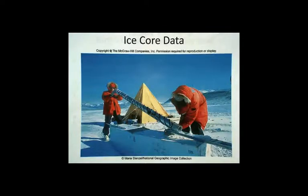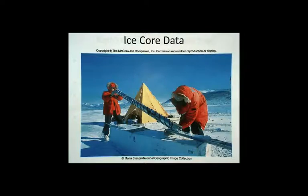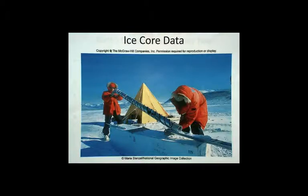To get data from millions and millions of years ago, scientists have drilled down into the rock at the bottom of the ocean. By looking at the change in the types of fossils that tell them the types of plants that were available, the amount of limestone, calcium carbonate and so on in that rock, they can go back over time and figure out what the concentration of carbon dioxide was and the temperature.